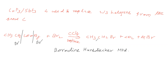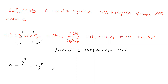Now what is the mechanism involved in this reaction? We will see the mechanism. We take the silver salt of carboxylic acid and treat it with Bromine.